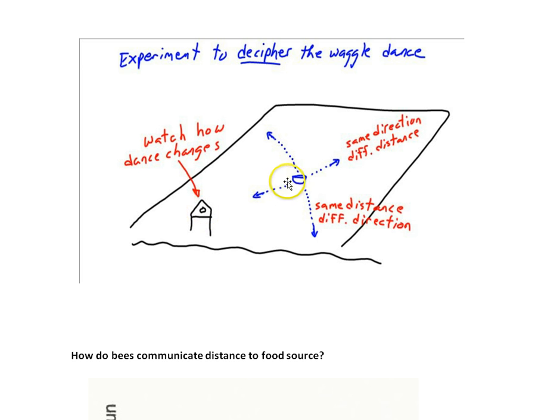So the original dances indicated the food was at this location. Then you systematically move the food to another location, changing only the direction, not the distance here, and see which part of the dance changes. You could move it over here, again, changing only the direction, not the distance.